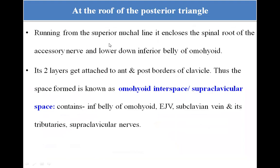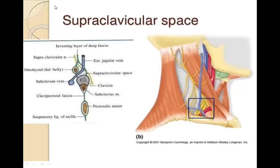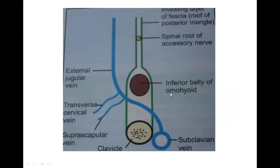At the roof of the posterior triangle, running from the superior nuchal line, it encloses the spinal root of the accessory nerve and, lower down, the inferior belly of the omohyoid muscle. Its two layers get attached to the anterior and posterior borders of the clavicle, thus forming the omohyoid interspace or the supraclavicular space. This supraclavicular space contains the inferior belly of the omohyoid, external jugular vein, subclavian vein and its tributaries, along with the supraclavicular nerves.